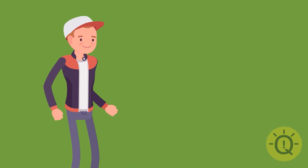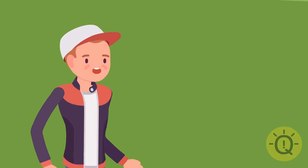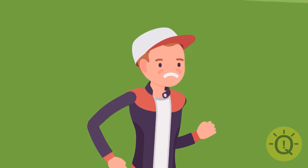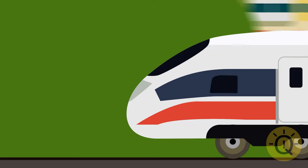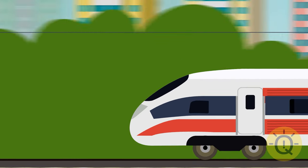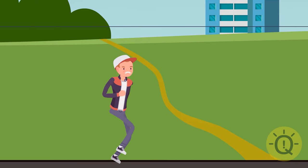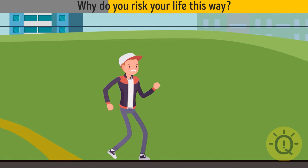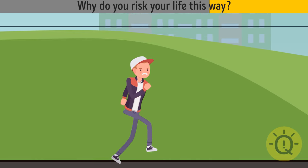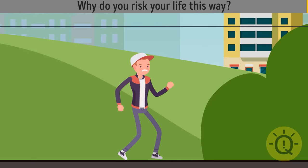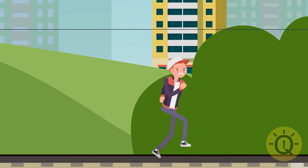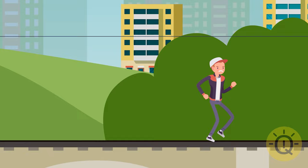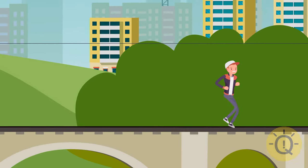You're walking along a railroad track. Suddenly you see a speedy train approaching you. Instead of getting off the track immediately, you run toward the train. Why do you risk your life this way? When you notice the train you are on a bridge. You can't leave the track right away and have to run to the closest place where you can do it.